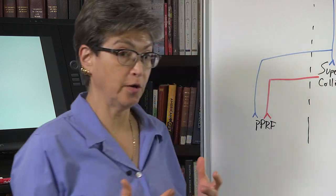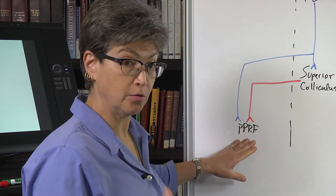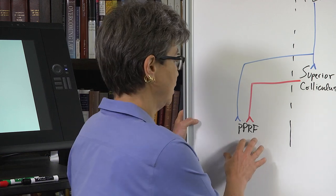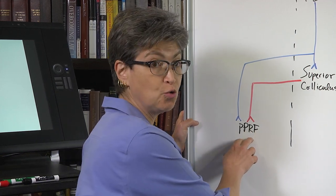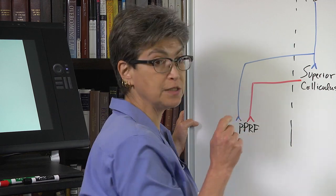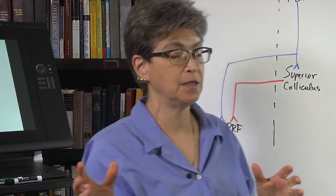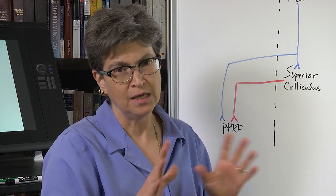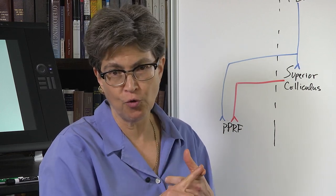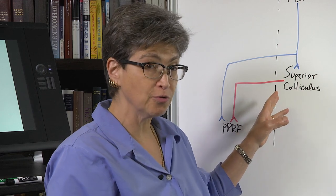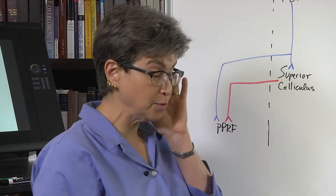Let's look at the control of eye movements, concentrating on horizontal eye movements. The incoming control to the horizontal gaze center arises from two primary places. One is the superior colliculus, which takes in primarily visual information about moving targets. It doesn't take in information about form or color, but it takes information about location and how a target is moving, allowing us to orient towards those moving stimuli.